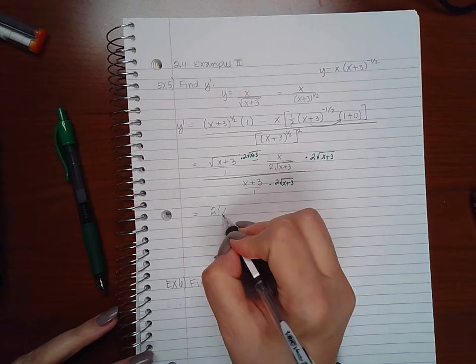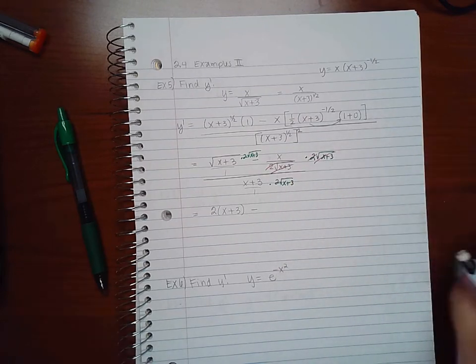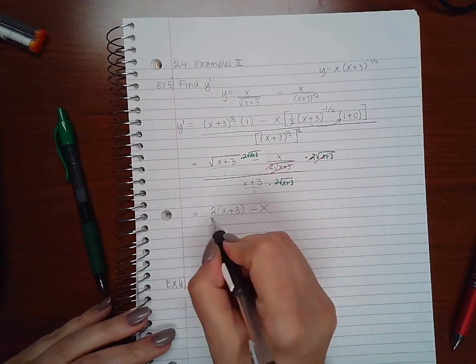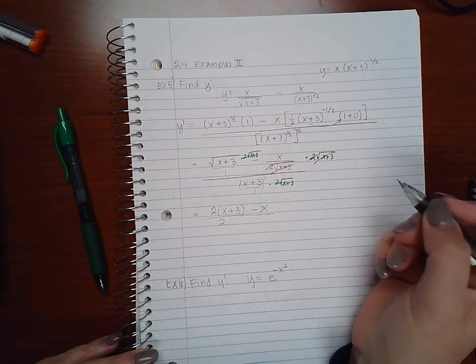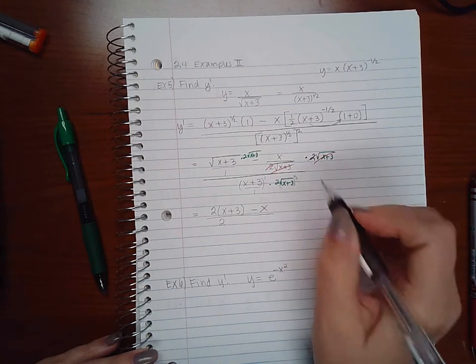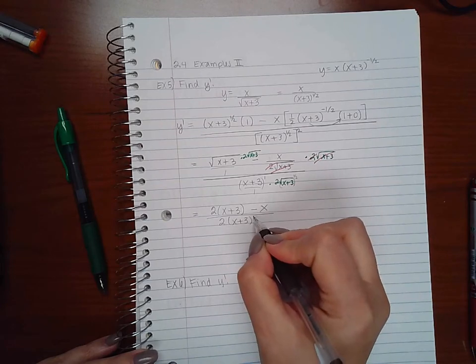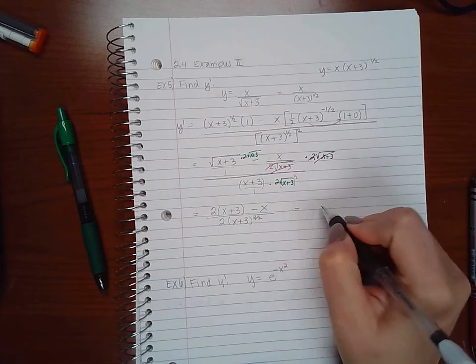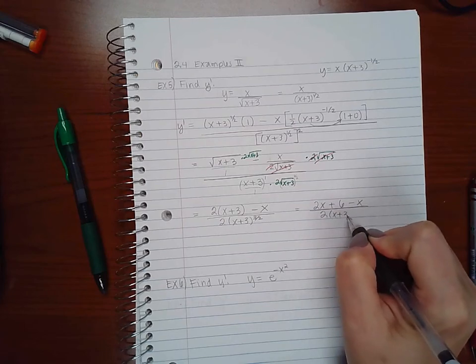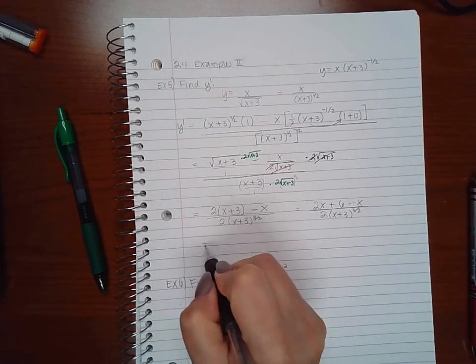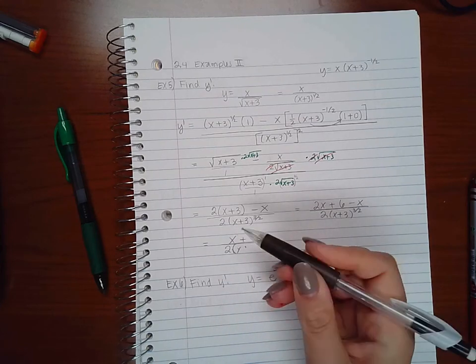So here I'll get 2 and then I'll get square root of (x+3) squared, which will just leave me with x+3. Here the 2's will reduce, the square root of (x+3) will reduce, and I'll just have the minus x. And at the bottom I'll have 2, but if this is considered to the first power and this is considered to the half power, the bases are the same so I can add those powers together and get (x+3) to the three halves. Now if I distribute my 2 in the numerator and I combine my like terms, I will get (x+6) over 2(x+3) to the three halves.